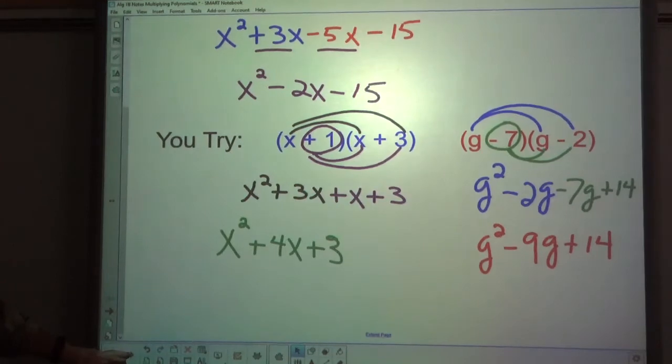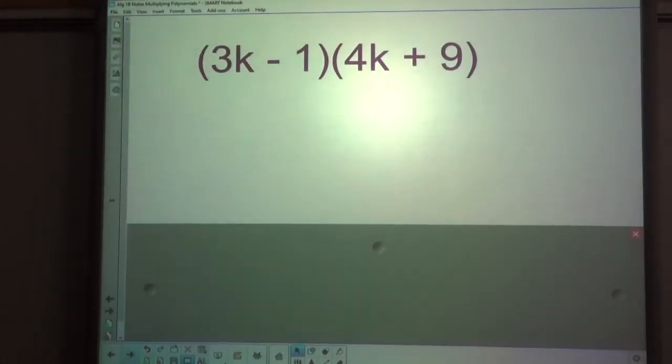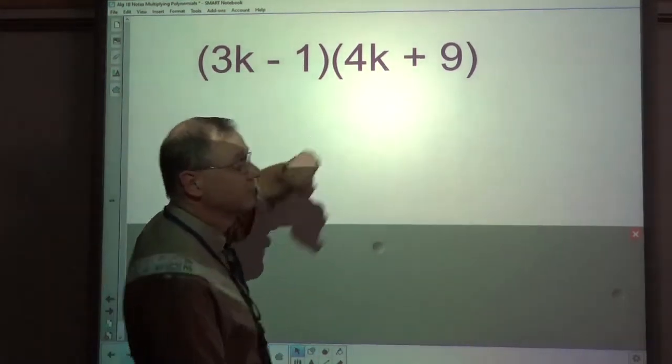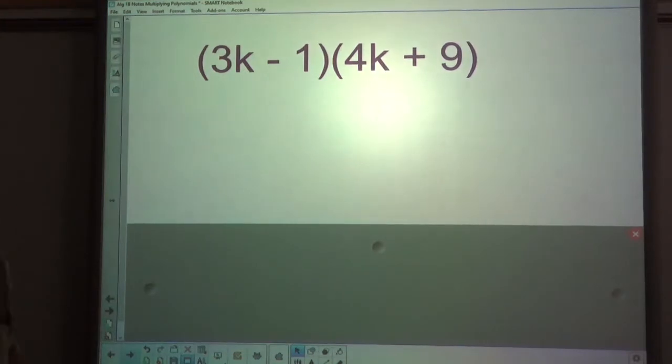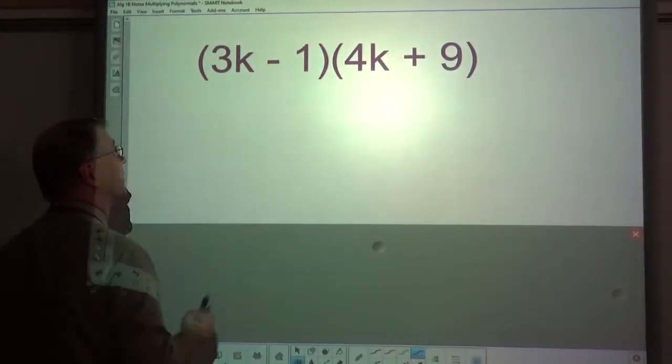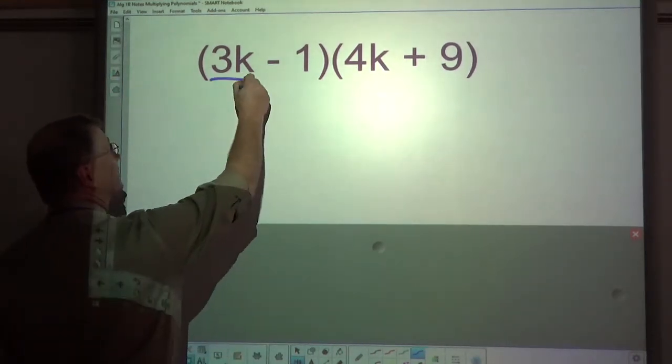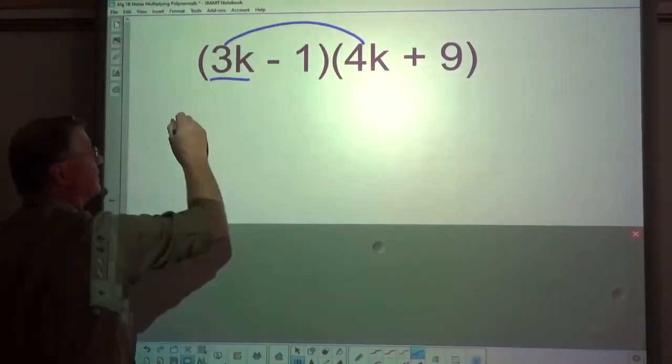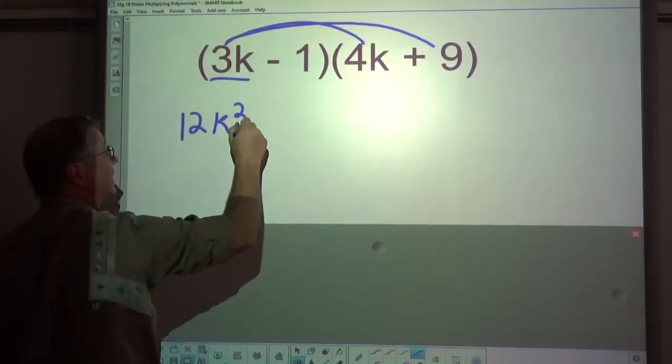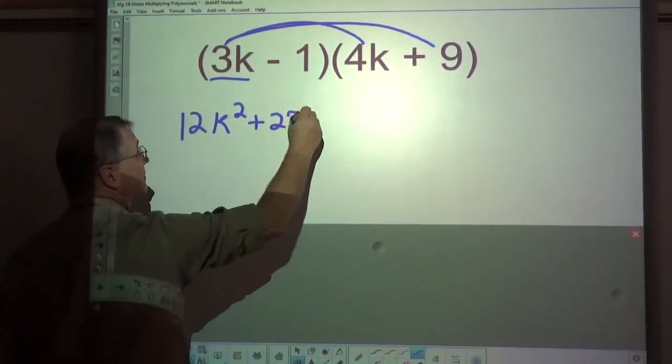Let's check the next one out. Here we don't have a coefficient of 1 for the variable. We have other coefficients for the variable. So I'm going to distribute the 3k to 4k. That makes 12k to the second. Then I distribute the 9 plus 27k.